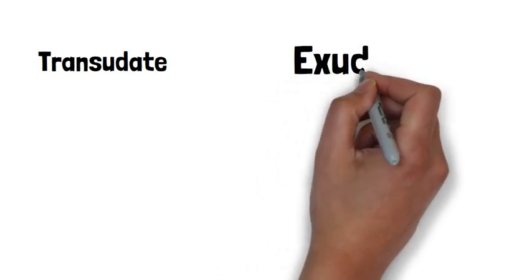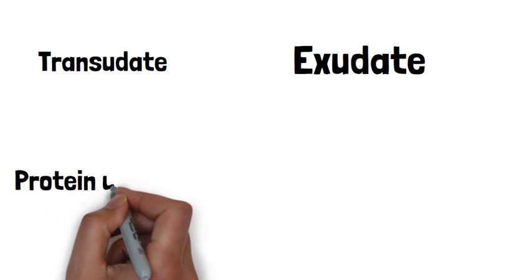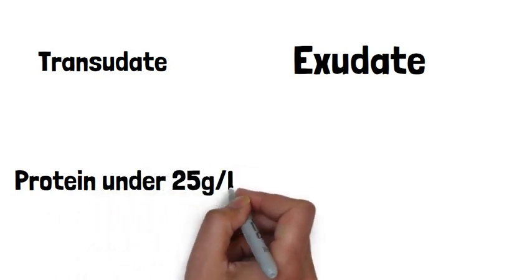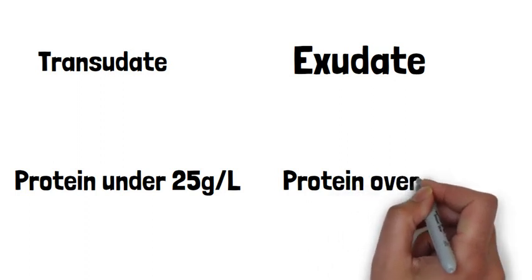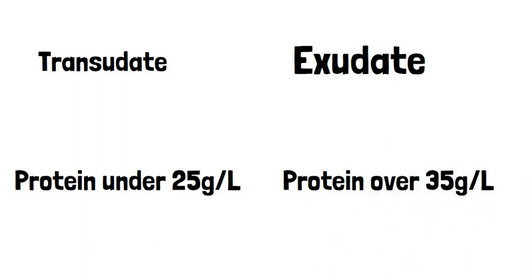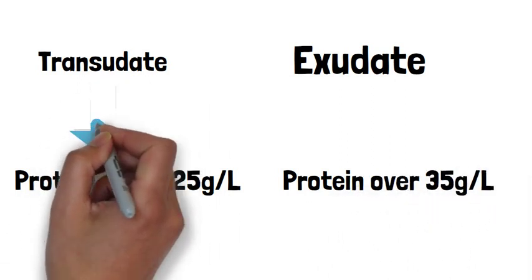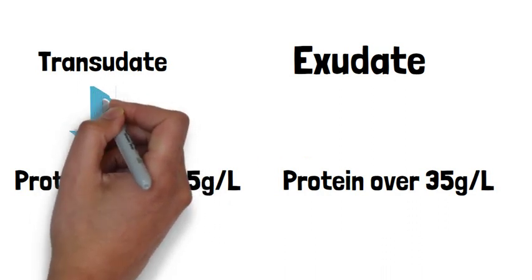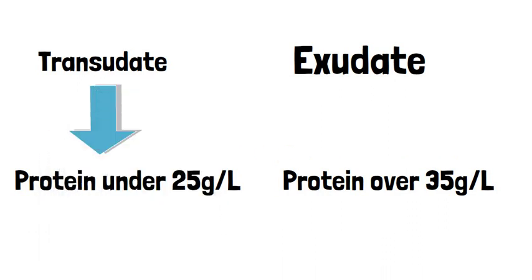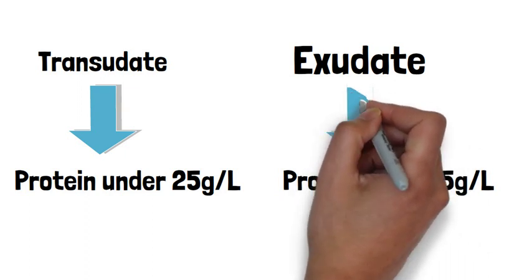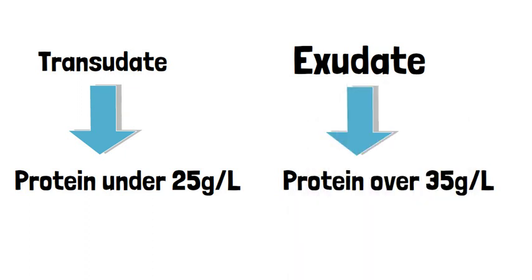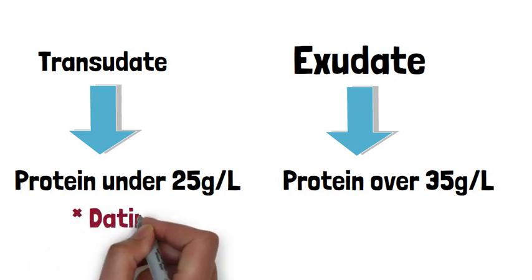So coming back to what is transudate and exudate, well it all really depends on the level of protein. So in transudate pleural effusions, the protein content is low, so it's less than 25 grams per liter. Whereas in exudate pleural effusions, there's a large amount of protein, generally greater than 35 grams per liter.